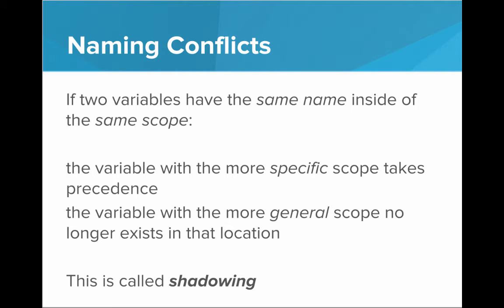Sometimes we might have naming conflicts inside of our code. If we have two variables that have the exact same name and they do exist inside of the same scope, then the variable with the more specific scope takes precedence. The variable with the more general scope no longer exists in that location. This is called shadowing.